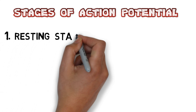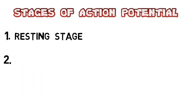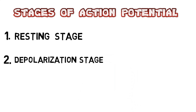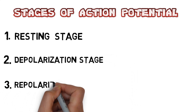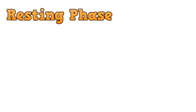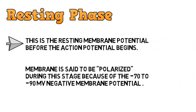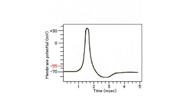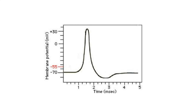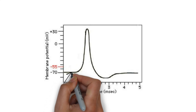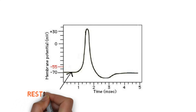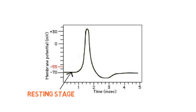The first is the resting stage, second is the depolarization stage, and third is the repolarization stage. In the resting stage, this is the resting membrane potential before the action potential begins. The membrane is said to be polarized during this stage because of a −70 to −90 millivolts membrane potential. On the graph of membrane potential versus time, the resting stage sits at −70 millivolts.